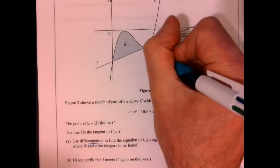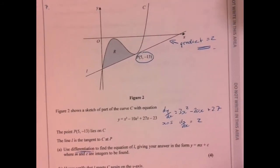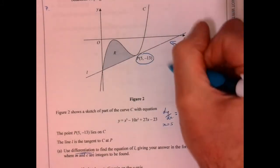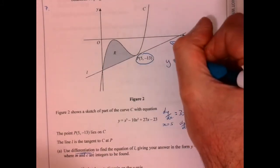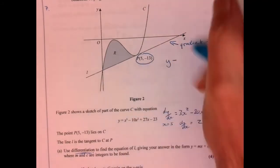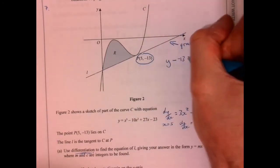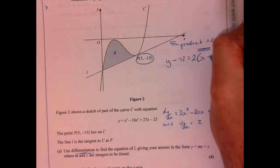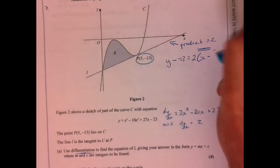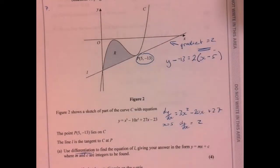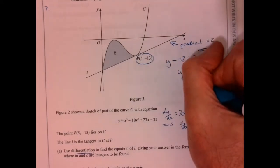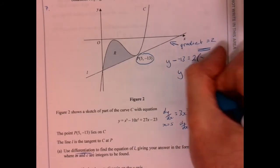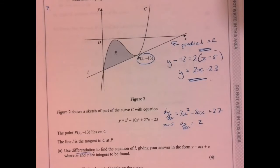And we also know the point it goes through. So now we can say y minus minus 13. This is just the equation of a straight line, and then 2 times x minus the x value point that we know. And if we quickly play with that, we get y equals 2x minus 23.